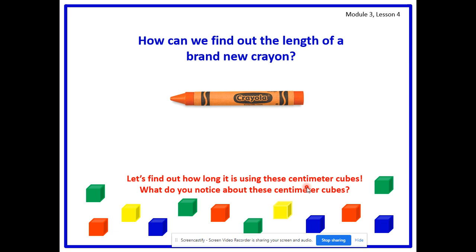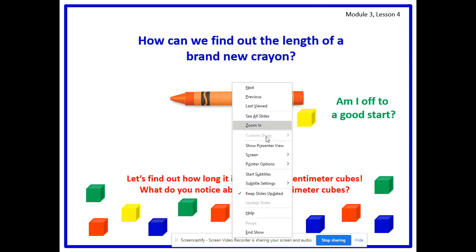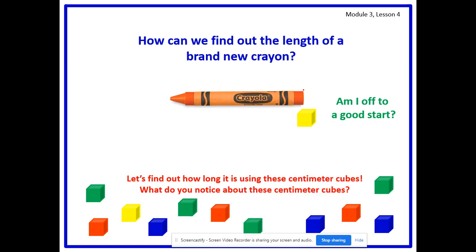Since they have the same length, we can figure out how many centimeter cubes long this crayon is. Count with me as I lay down each centimeter cube to match the length of the crayon. I'm going to remember to say the unit — one centimeter cube. I have to align the endpoints. My crayon is not aligned with the centimeter cubes, so my endpoints are not aligned. Let me fix that.